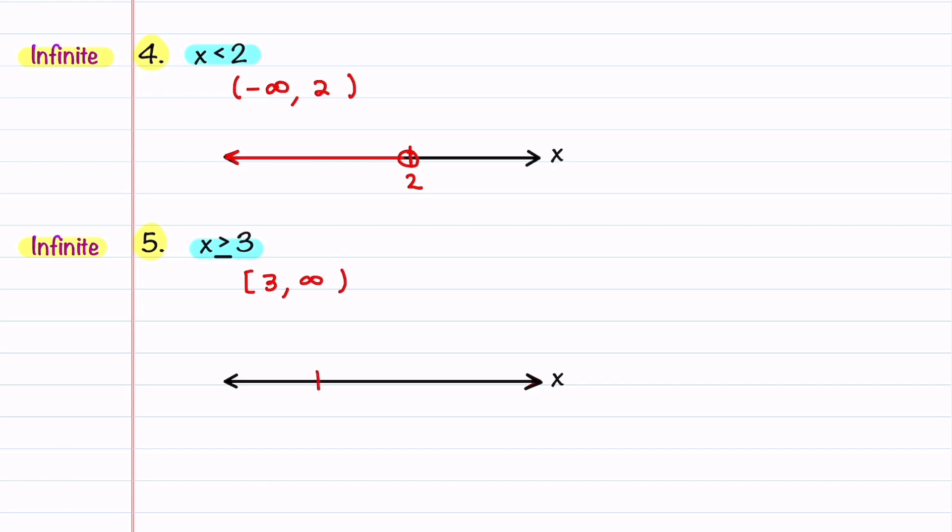We'll put 3 on our number line, put a closed circle there, and then we'll draw a line to the right, indicating that all numbers to the right are included. These are all the different types of problems that you can encounter, and I hope that you now feel more comfortable using interval notation.